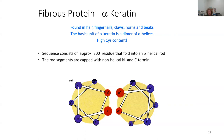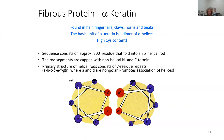The rod segments are capped with a non-helical adenosine termini. The primary structure of the helical rod consists of seven amino acid repeats — A, B, C, D, E, F, G — where A and D are non-polar residues.